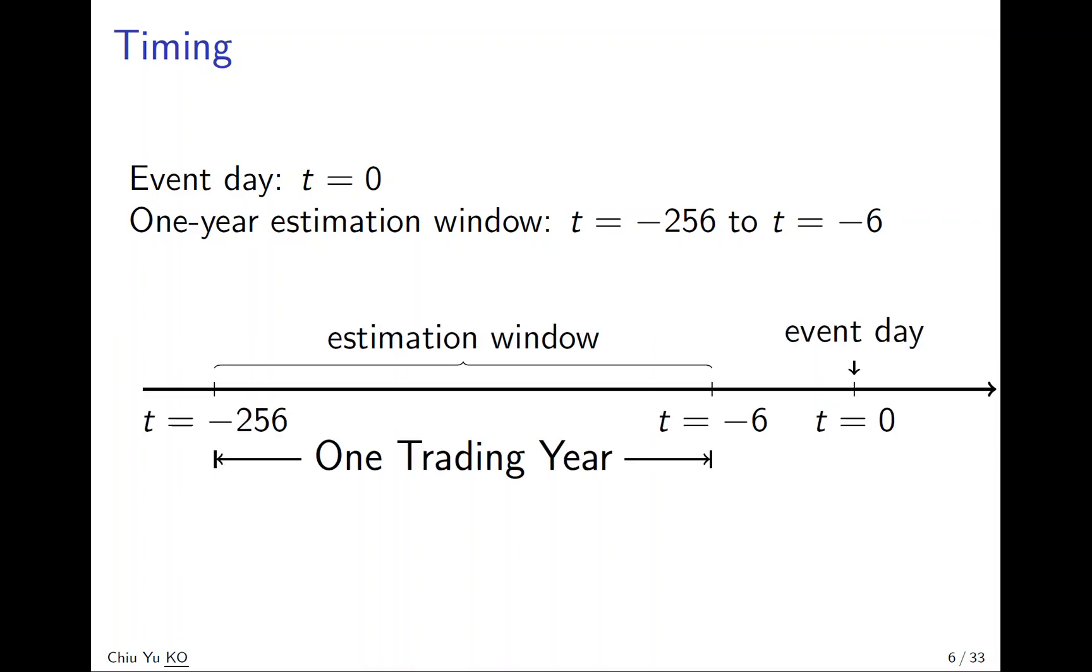The estimation window is one year. We use this information to estimate what the stock would behave on the event day if the event doesn't happen. We calculate the hypothetical stock performance without the event and take the difference with what actually happened to get the abnormal return.